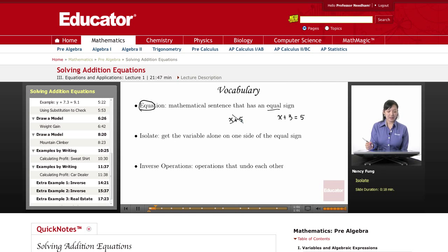Isolate. Isolate means to get the variable alone on one side of the equal sign. Maybe you've heard on TV or something that when a person is in isolation, they are alone. So you can think that isolate means to get the variable alone.